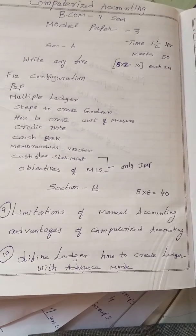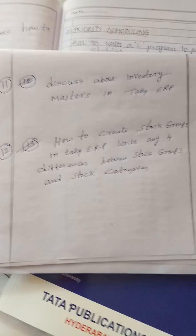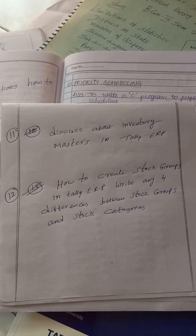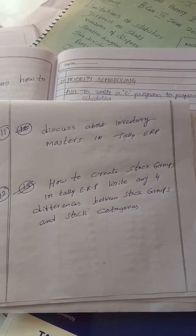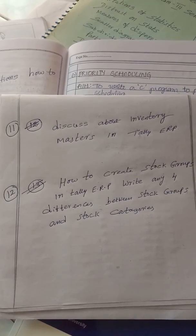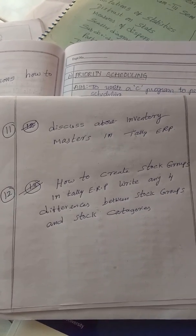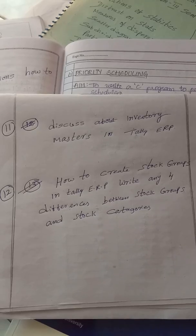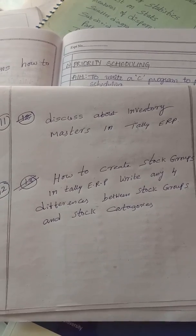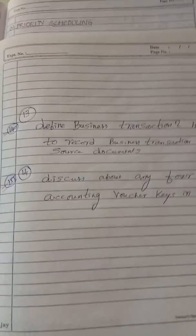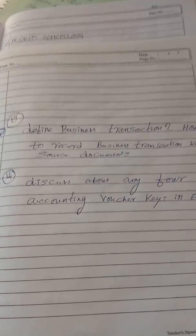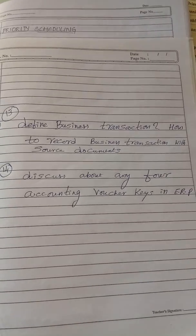This is the 11-12 mark question. Discuss about inventory masters in Tally ERP. The 12th one: how to create stock groups in Tally ERP. Write any four differences between stock groups and stock categories.